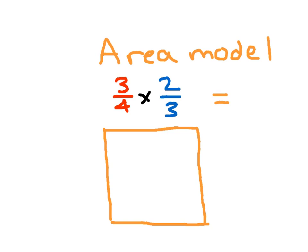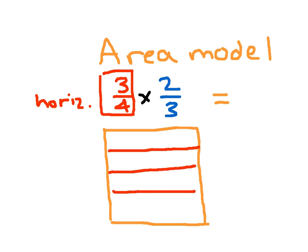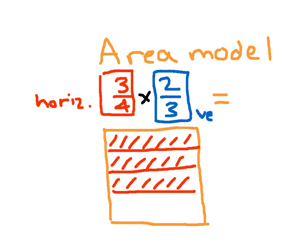Here's the area model for 3 fourths times 2 thirds. For the first fraction, 3 fourths, we divide horizontally into 4 parts and shade 3 of them. For the second fraction, 2 thirds, we divide the same model vertically into thirds — the denominator tells us to divide into 3 parts. We color in 2 of those thirds.